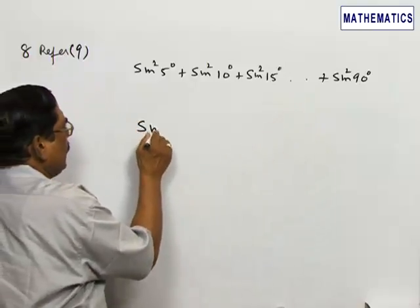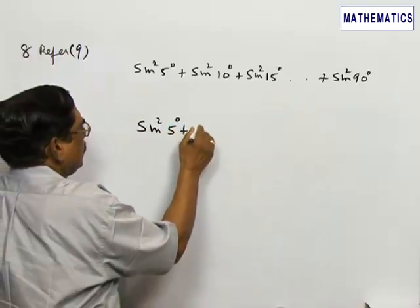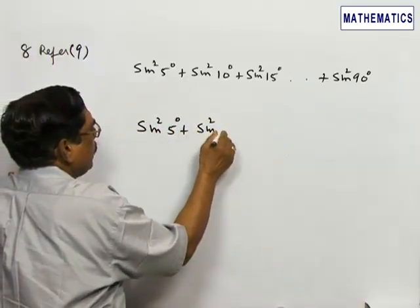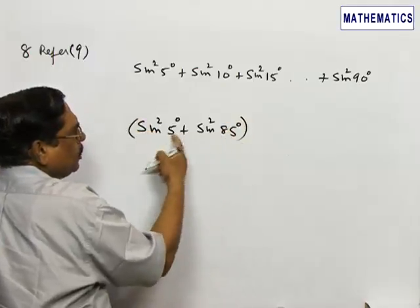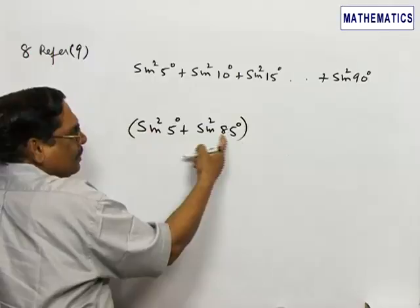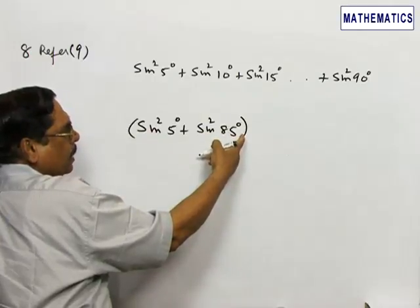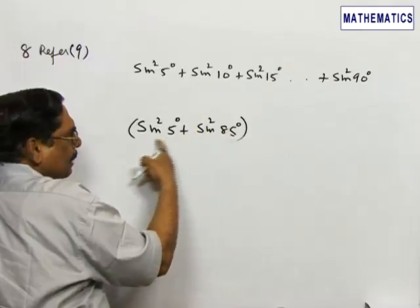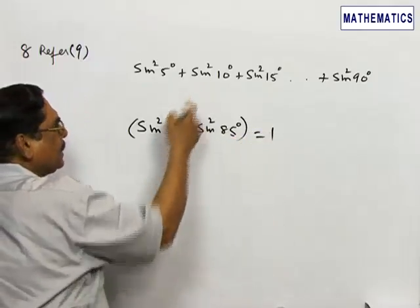Sine squared 5 degrees plus sine squared 85 degrees—these two combined will be 90. I will change sine squared 90 minus 5 degrees to cos squared 5 degrees. Therefore this will be equal to 1.